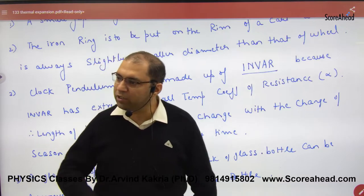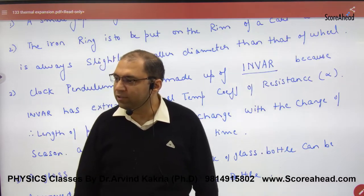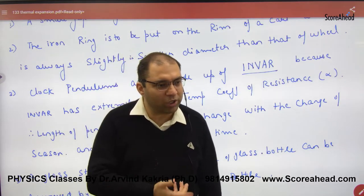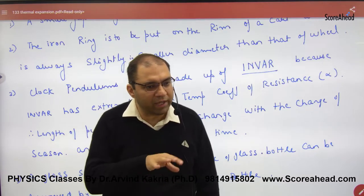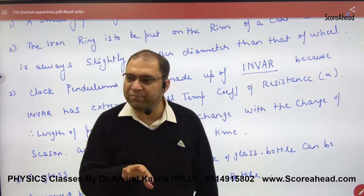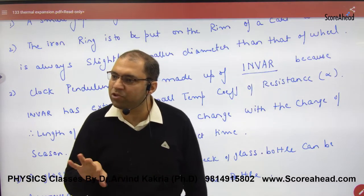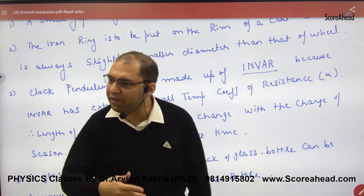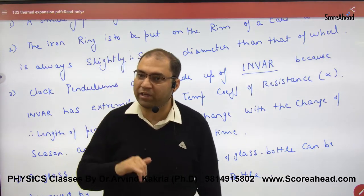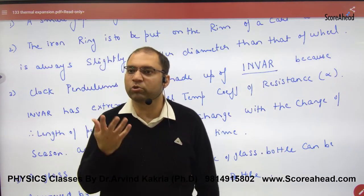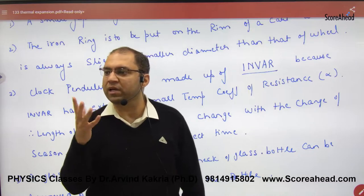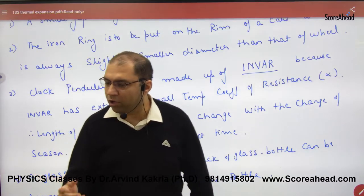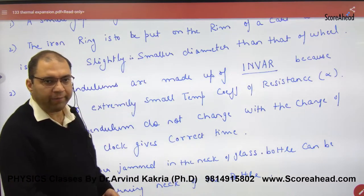When it is very cold, the length will be small, so the time period will be small — the clock runs fast. This means throughout the year the clock will never show the same time consistently. So we need a material whose length is not affected by temperature changes. Which material is that? Invar.